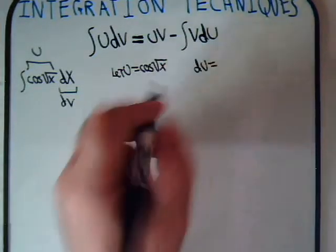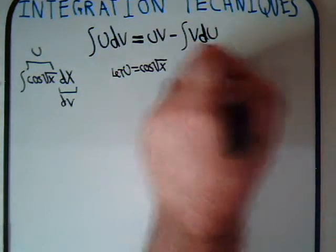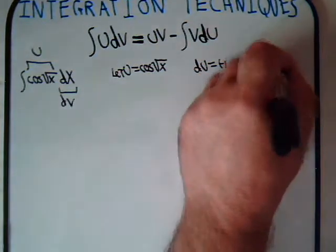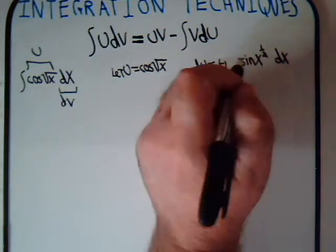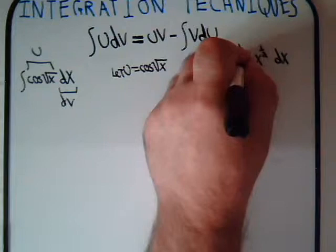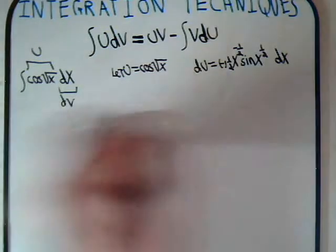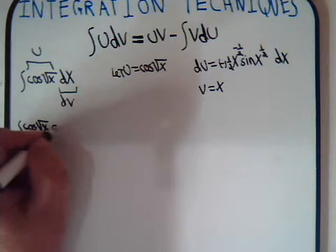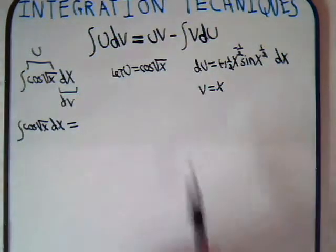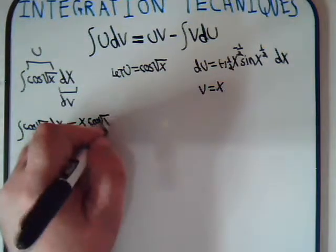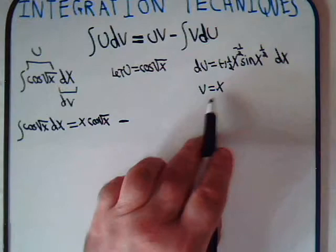So du will equal minus the sine of the square root of x, times dx, times the derivative of what's inside, which is one-half x to the minus one-half. And v is just x. So the integral of cosine of the square root of x dx equals u times v, minus the integral of v du.